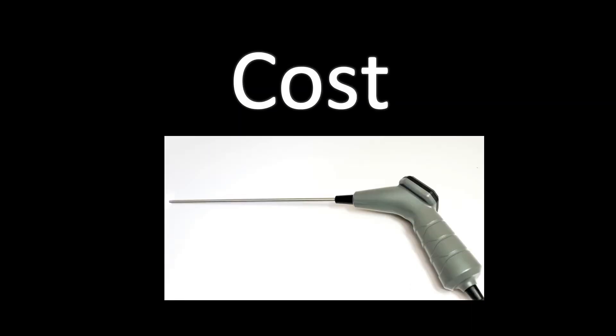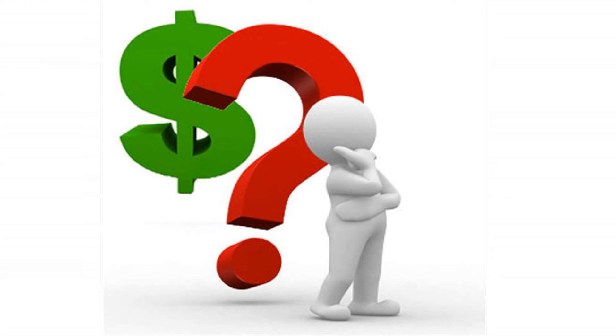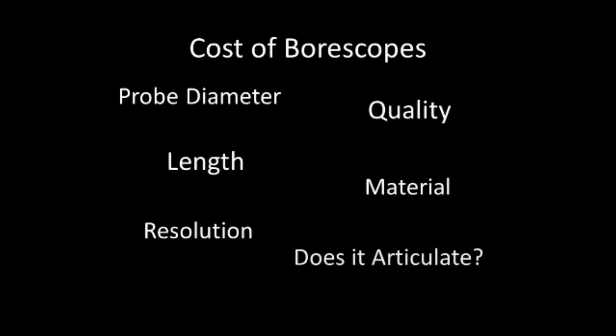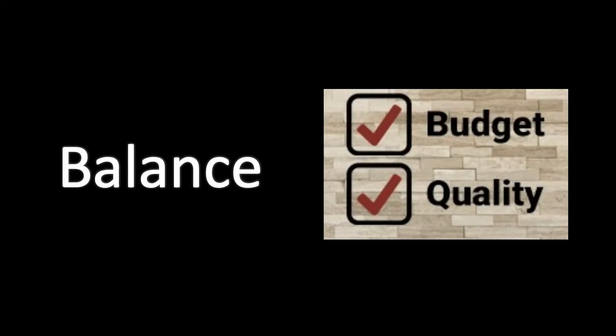The cost of your boroscope is determined by several factors: quality, length, articulation, resolution, the ability to articulate, and more. Boroscopes now range from around $30 super cheap cameras from Amazon to tens of thousands of dollars on the higher end. Try to find a comfortable range in buying a scope that does not sacrifice quality but also does not compromise your budget.